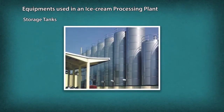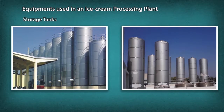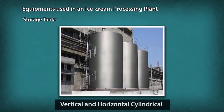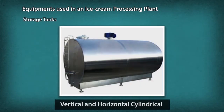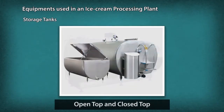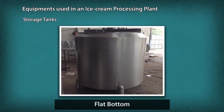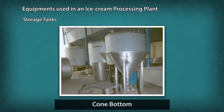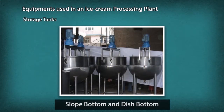Storage Tanks are containers that hold hot or cold liquids used for short or long term storage. In a dairy industry, the storage tanks are classified based on structure and heat preservation capacity. Storage tanks are available in many shapes, for example, vertical and horizontal, cylindrical, open top and closed top, flat bottom, cone bottom, slope bottom and dish bottom.